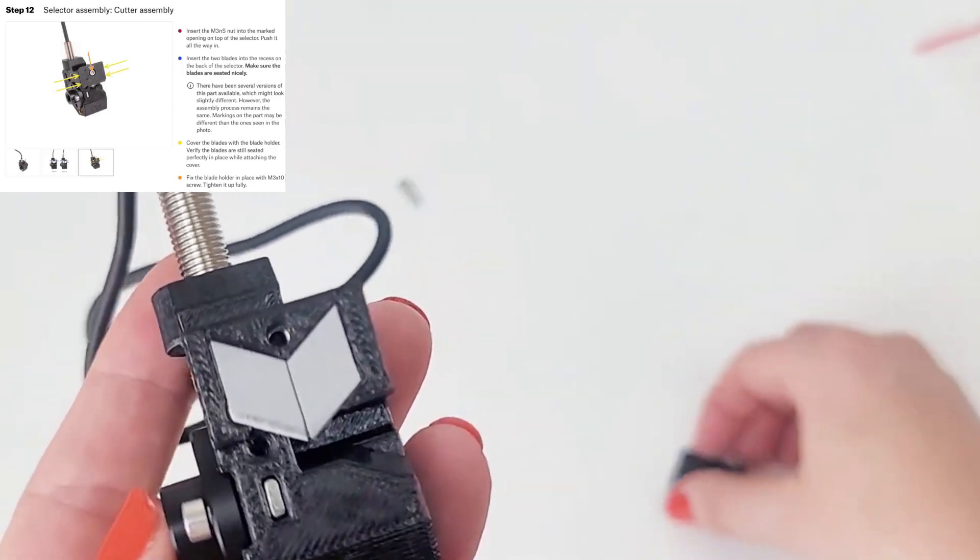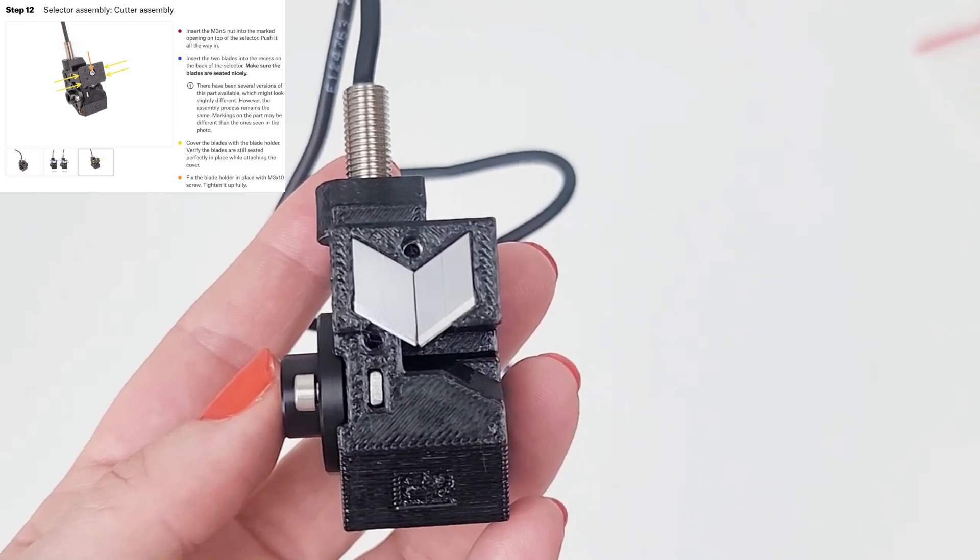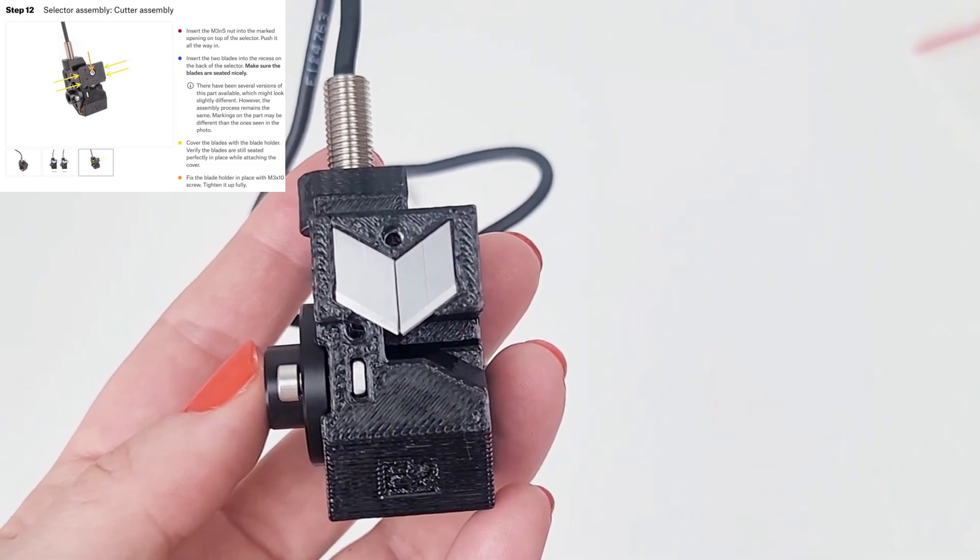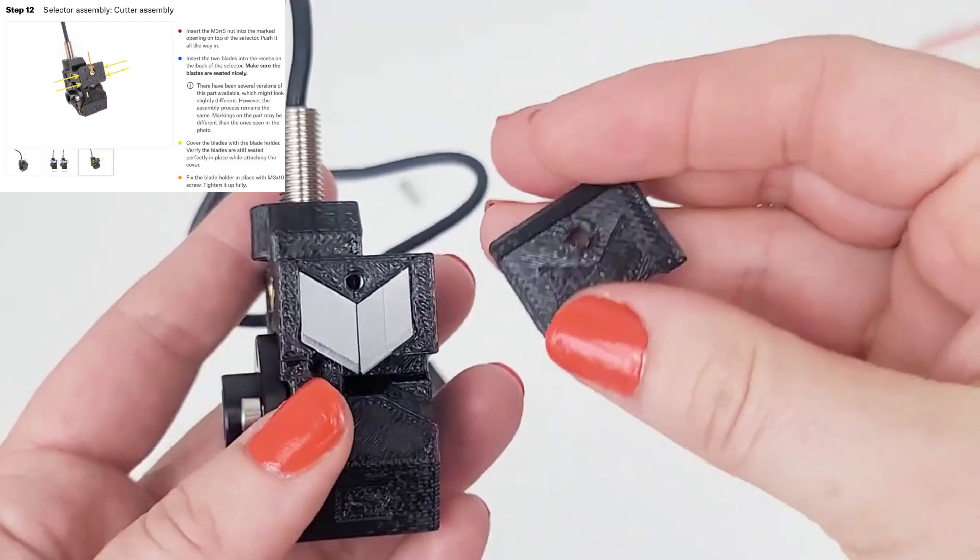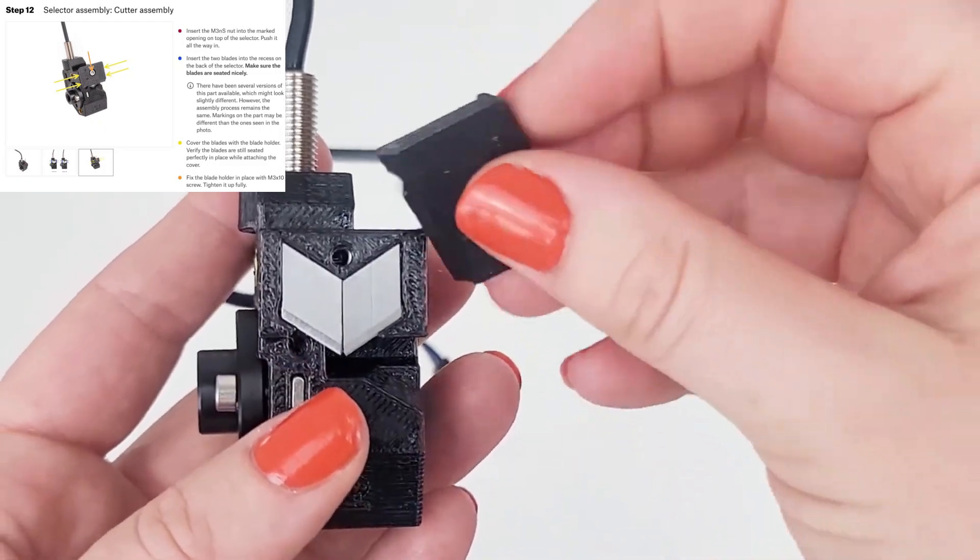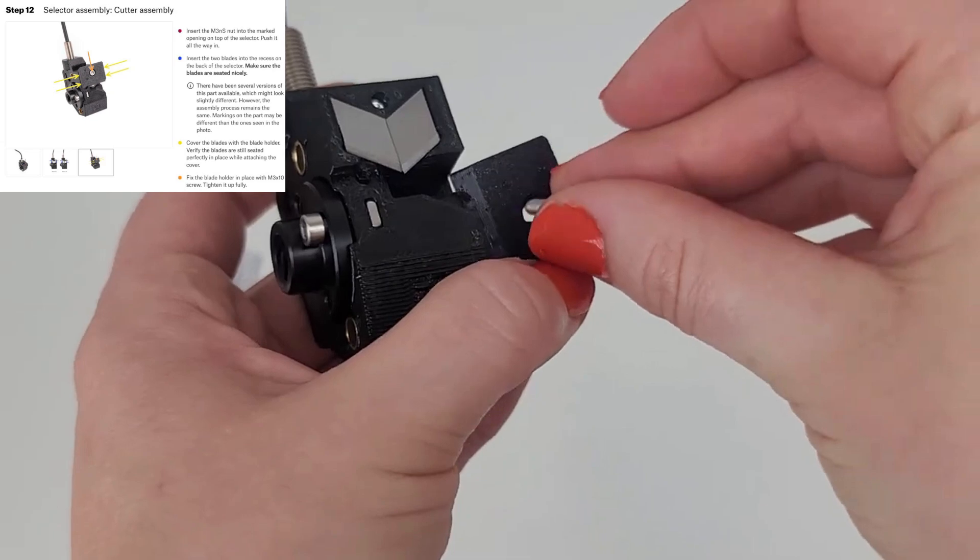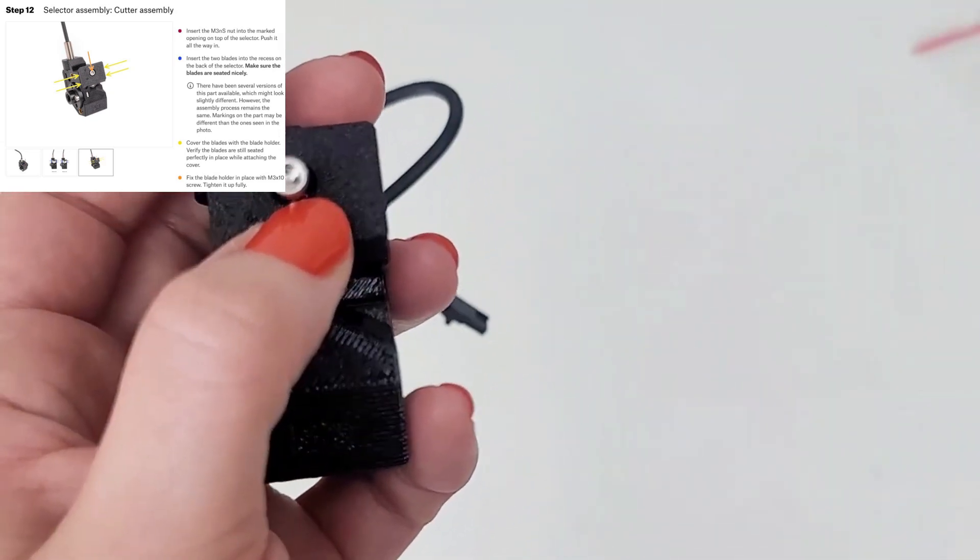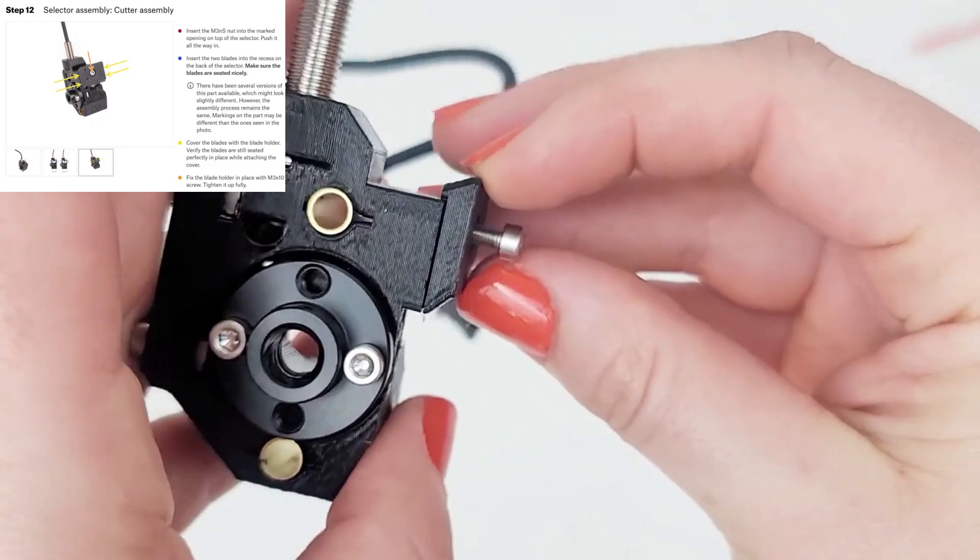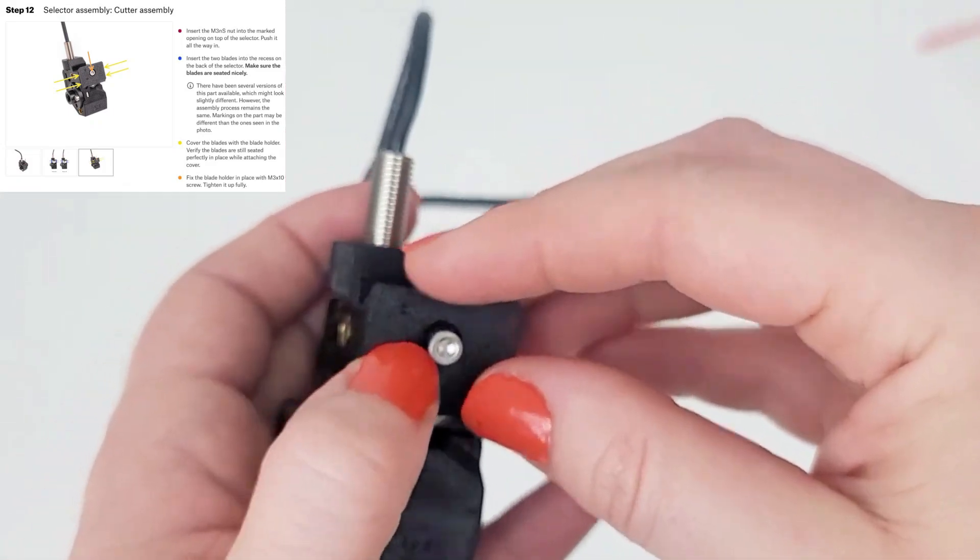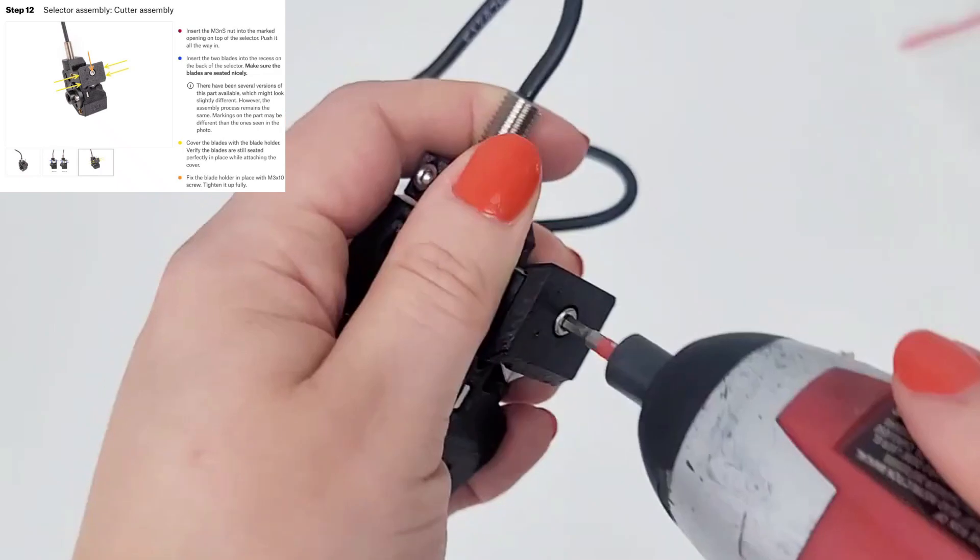Now we're going to cover the blades with the blade holder. Verify the blades are still seated perfectly in place while attaching. Fix the blade holder in place with M3 by 10 screw. It looks like it's got a little bit of a notch over the back piece there.